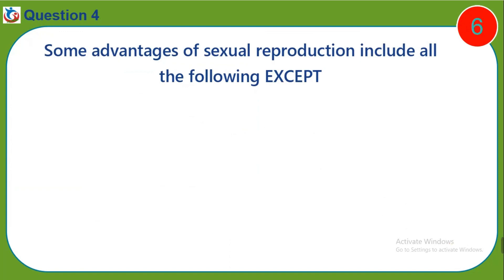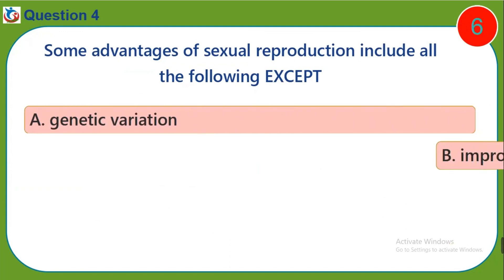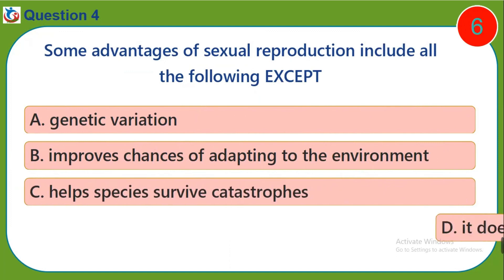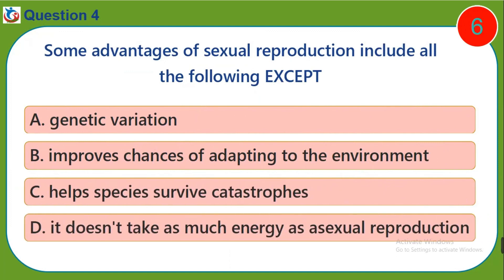Question four: Some advantages of sexual reproduction include all the following except — a) genetic variation, b) improves chances of adapting to the environment, c) healthy species survives catastrophes, d) it doesn't take as much energy as asexual reproduction.